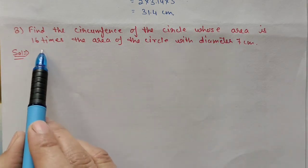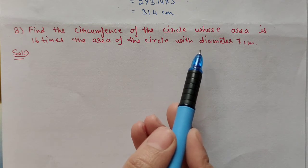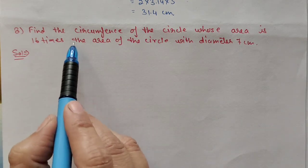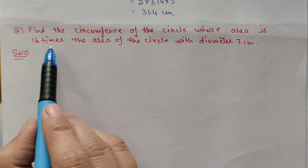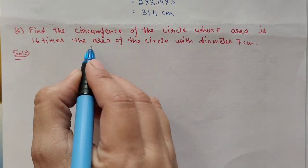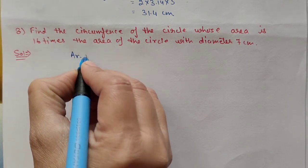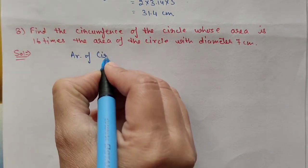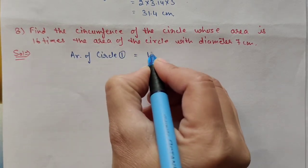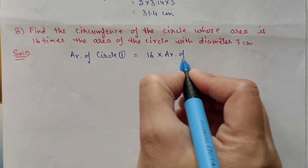Question number 8: Find the circumference of the circle whose area is 16 times the area of a circle with diameter 7 centimeter. We have two circles and the condition is: area of circle 1 equals 16 times area of circle 2.